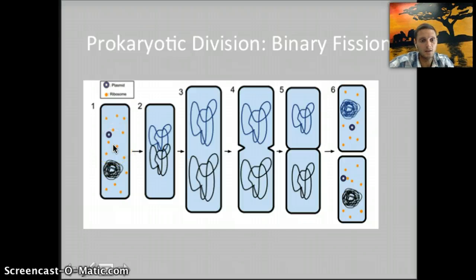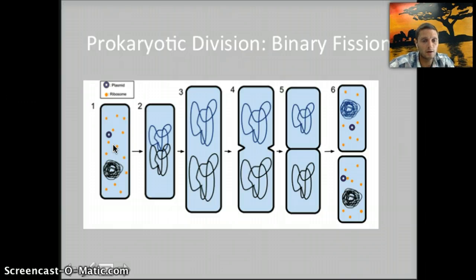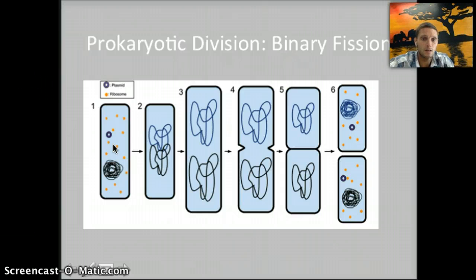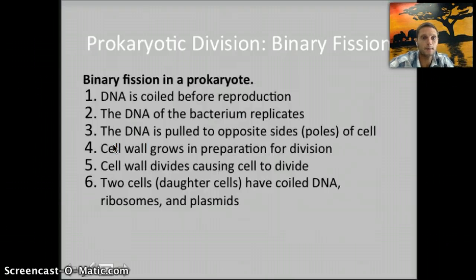From one cell, we get two cells. This is one of the reasons why bacteria — as examples of prokaryotes — can divide and multiply so quickly, because they're creating exact copies of themselves. What prevents them from continuing to overtake the planet is availability of resources, including space. If you've ever grown bacteria on agar plates, they grow very quickly at first, then growth slows because there are fewer nutrients and less space available. Here are those steps we just talked about for binary fission.